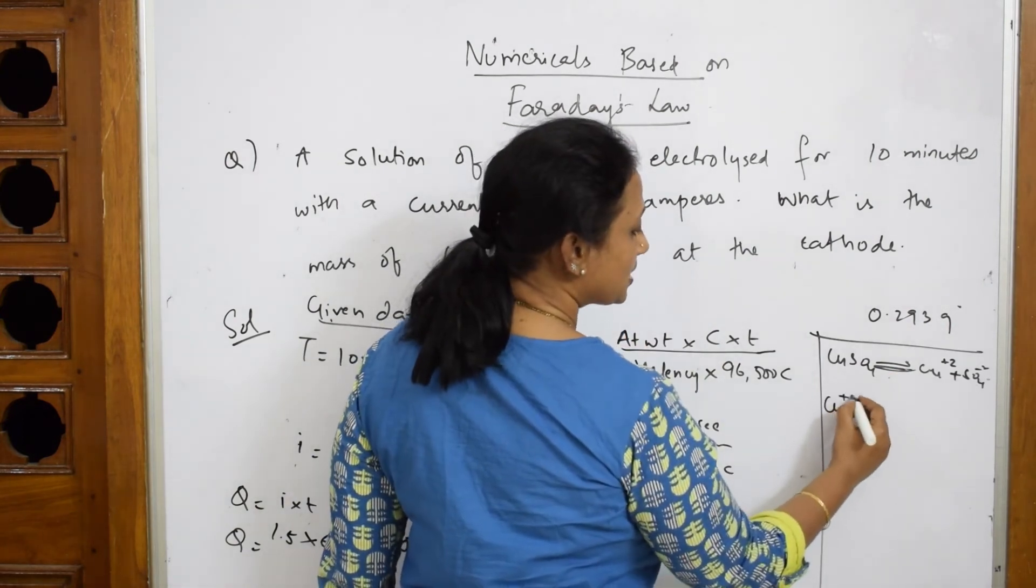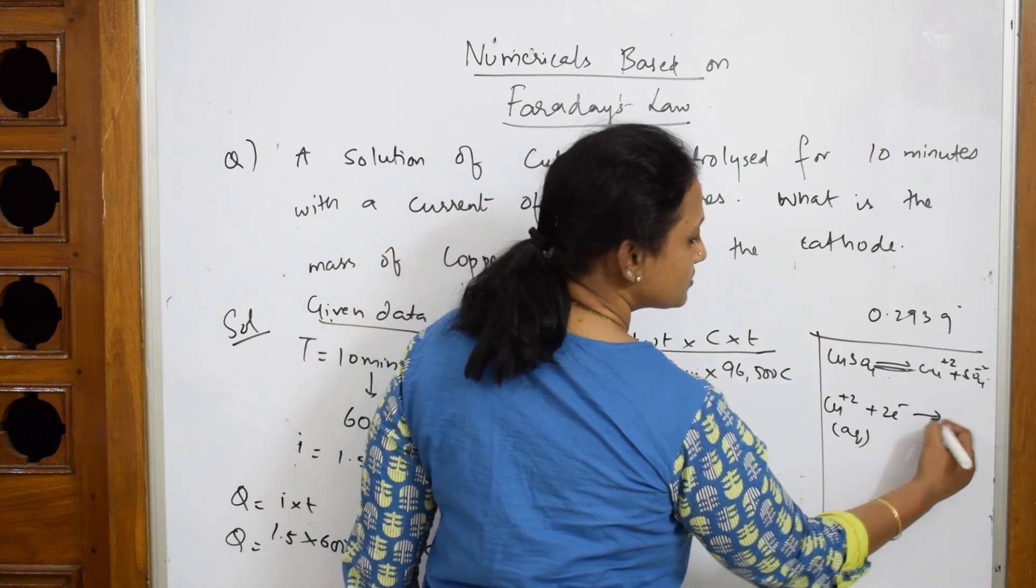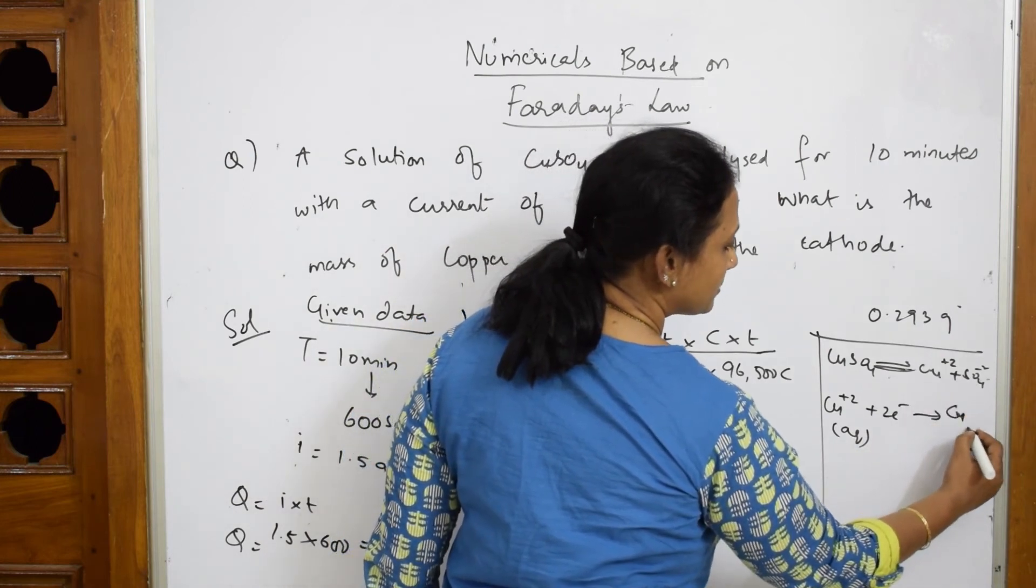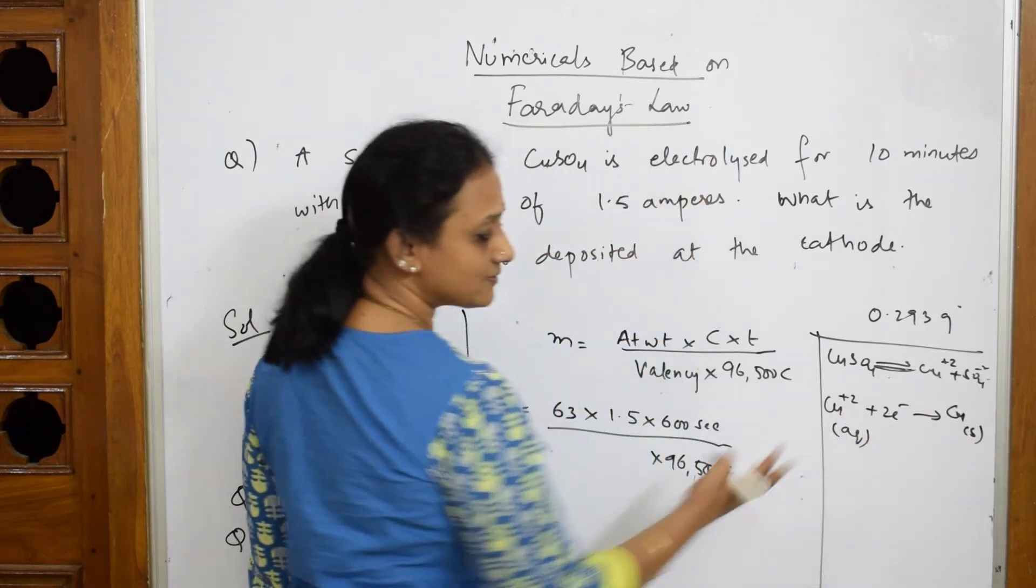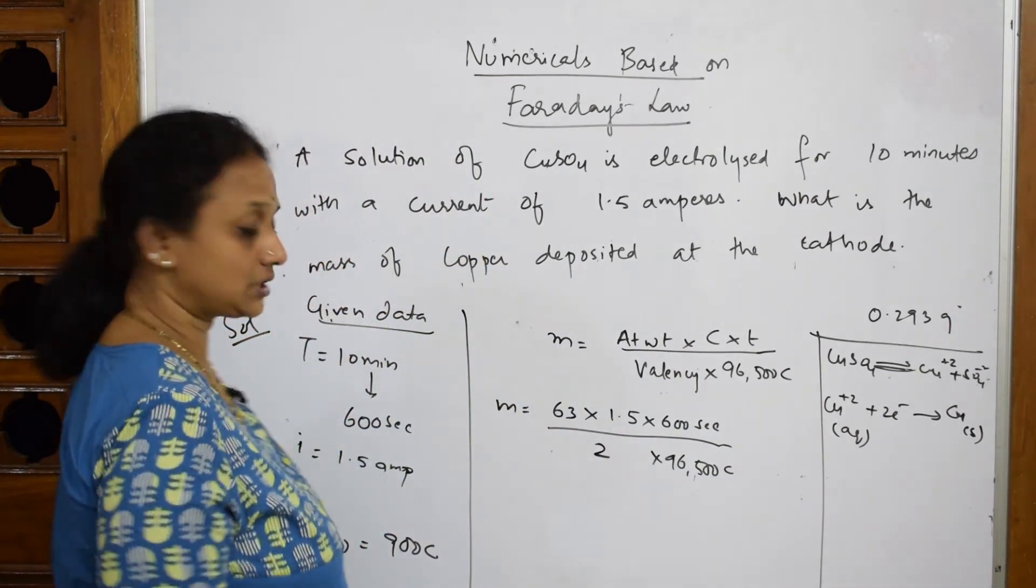Now, copper, Cu plus 2. This is an aqua state. Picks up these two electrons and forms copper solid that is your metal. How many electrons? What is the valency now? 2. Plus 2 is a valency. So, 2. Done.